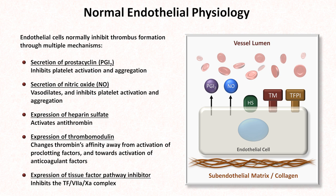Heparin antithrombin, thrombomodulin, thrombin, and the tissue factor 7A-10A complex will all be discussed in the next video. In addition to these normal functions of the endothelium, which prevent spontaneous thrombosis, the normal laminar flow of blood through the vessels typically results in a layer of cell-free plasma immediately adjacent to the endothelium, preventing platelets from making physical contact with endothelial cells, which could trigger activation.